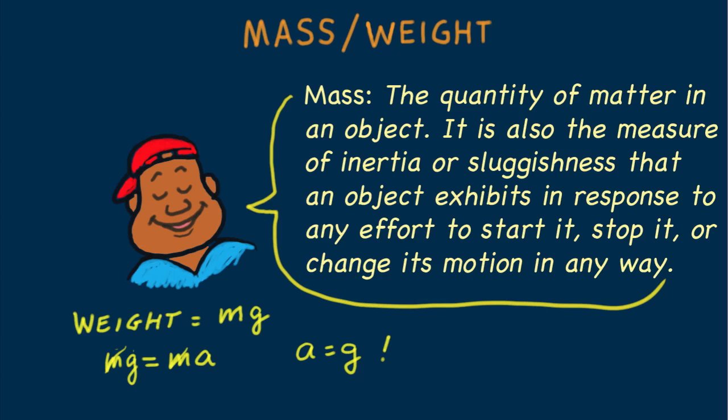Large mass objects experience a lot of gravitational force. Small mass objects experience little gravitational force. That's why it's easy to confuse mass and weight. But remember, an object carried to the moon will have less weight there, but the same mass.